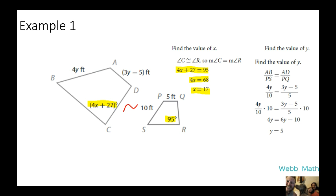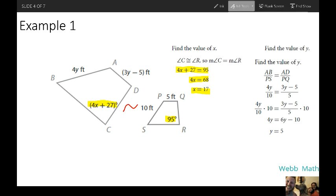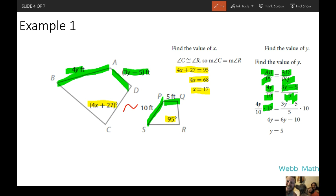Now finding the value of y. When you're looking at y, you know that AB has to be proportional to this guy, and AD has to be proportional to PQ. So AB has to be proportional to PS and set it equal to the other sides that are also proportional, AD over PQ. So here you have 4y over your 10 feet equaling your 3y minus 5 over your 5 feet. So we're going to get y all by himself. It looks like we use the multiplication property to get rid of that 10, and then once you get that, use algebra and you'll figure out that y equals 5.